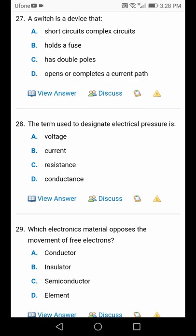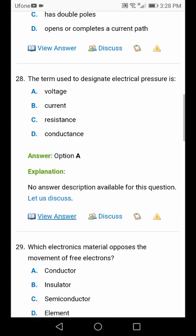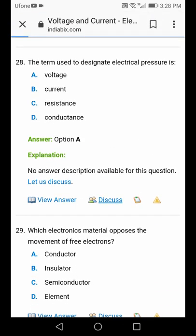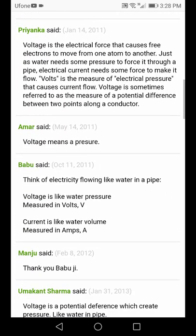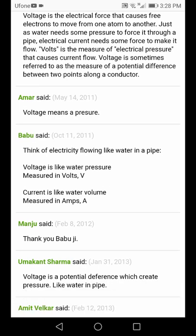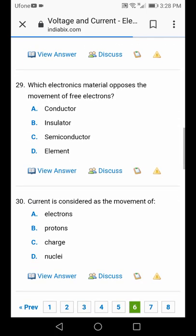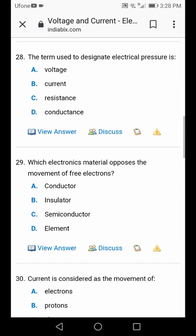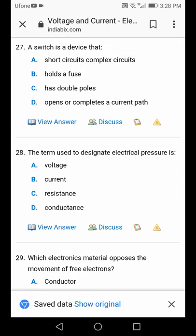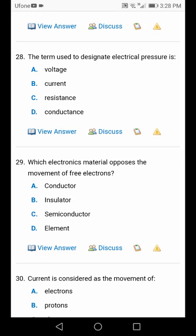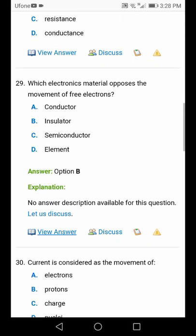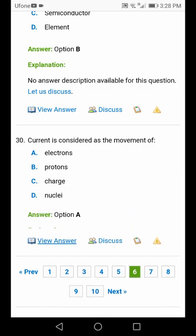It has been discussed in the forum that when water flows, think of electricity flowing like water in a pipe. Voltage is like water pressure. Current is considered as the movement of electrons, option A.